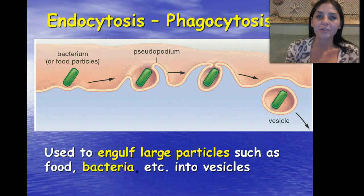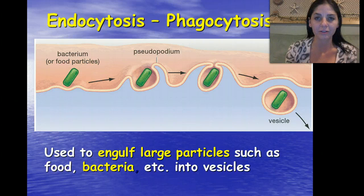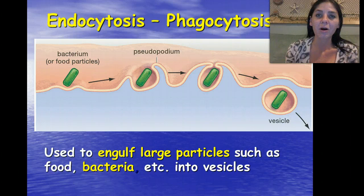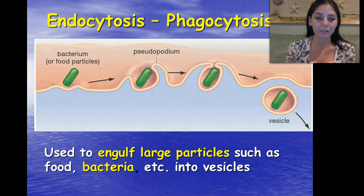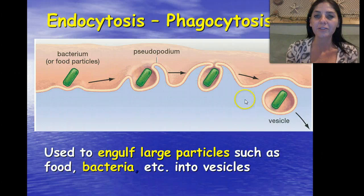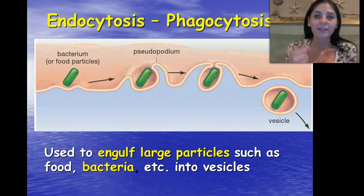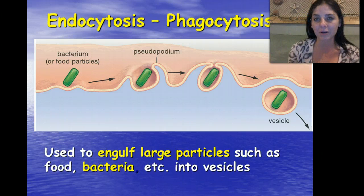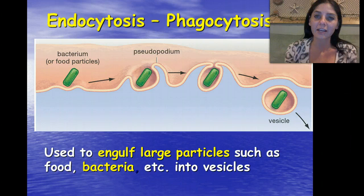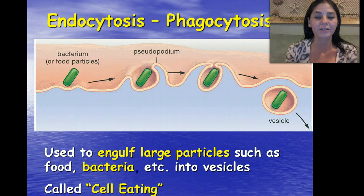Another type of endocytosis is called phagocytosis. Phago — food. We're taking in really big molecules, like bacteria and very large particles such as food. The same thing — we form an invagination and these are taken into the cell through the process of phagocytosis. So phago means food, and pino we pinch a little pint like we're drinking. Cellular drinking is pinocytosis, and taking in food or cellular eating is phagocytosis.